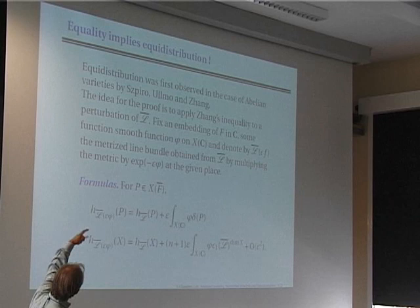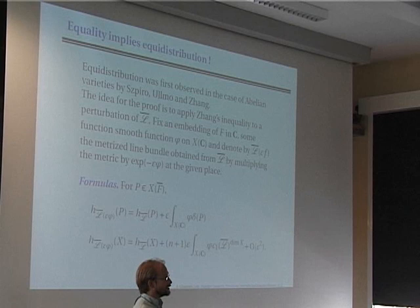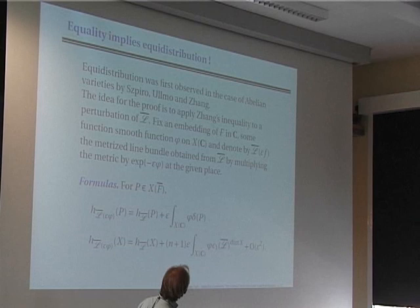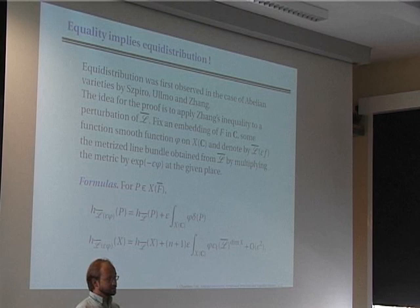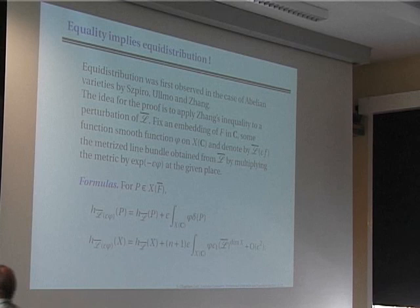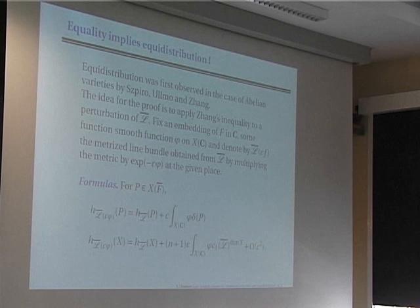The idea for the proof is to apply Zhang's inequality to small perturbations of the line bundle L̄. You pick a function φ on the complex space of X (since you're interested in complex equidistribution) and denote by L̄(ε, φ) the metrized line bundle obtained from L̄ by multiplying the metric by exp(−εφ). This means that if the norm of a section at point x was ‖S(x)‖, at the new metric it becomes ‖S(x)‖ · exp(−εφ(x)).